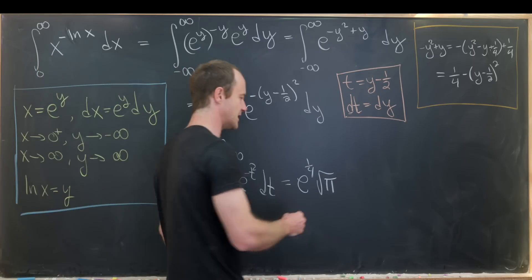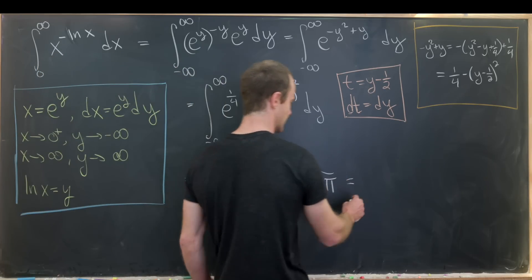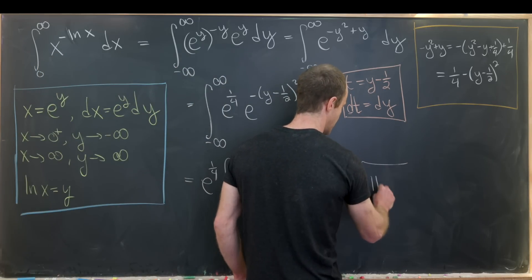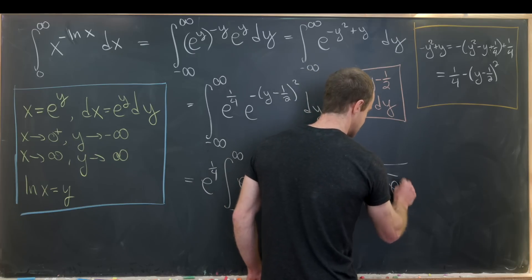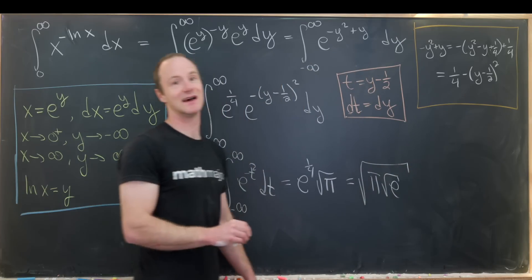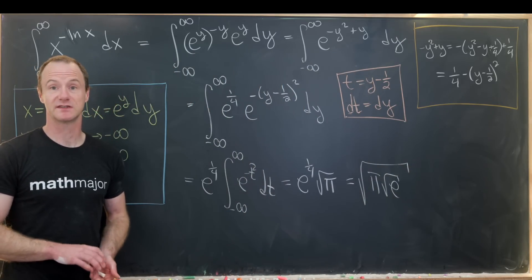But I think it's kind of a little bit nicer to write this in the following format. The square root of pi times the square root of e, where we have that nice nested square root. And that's a good place to stop.